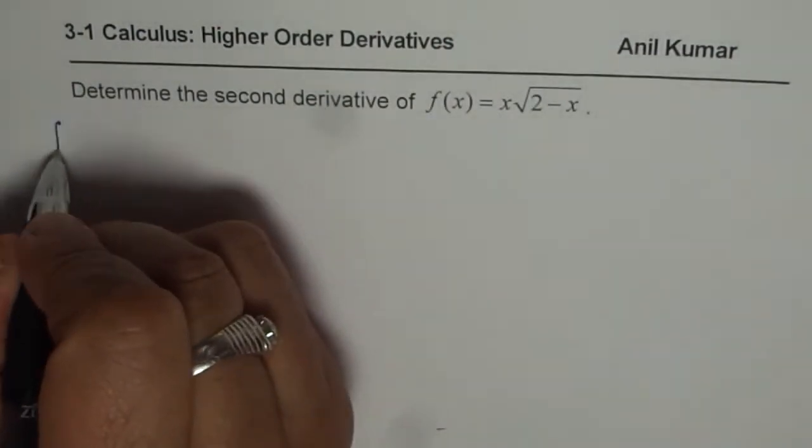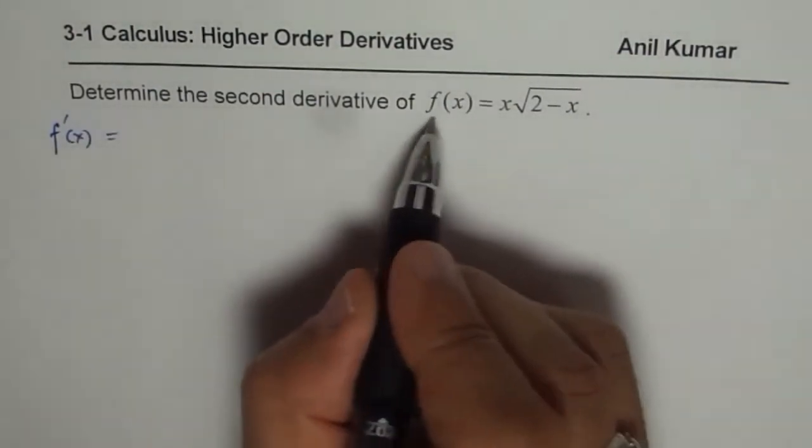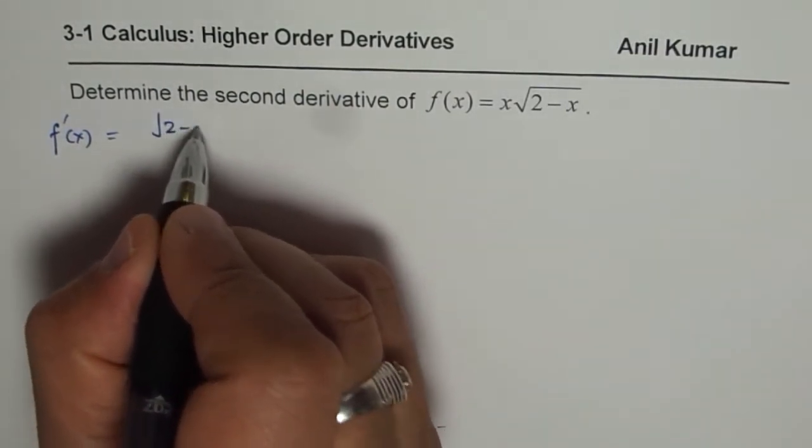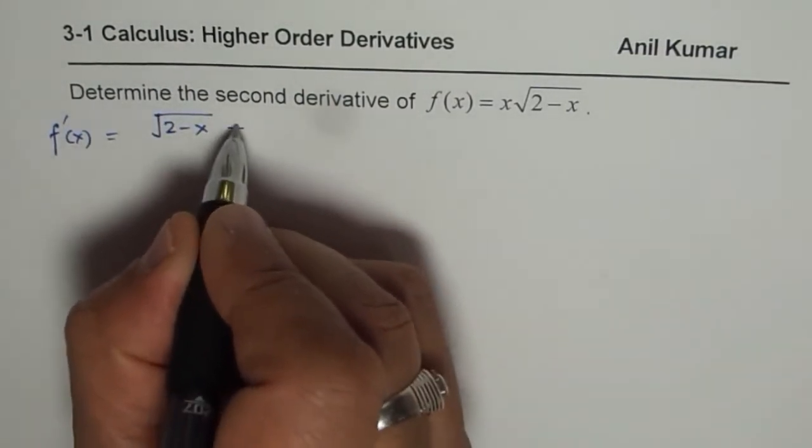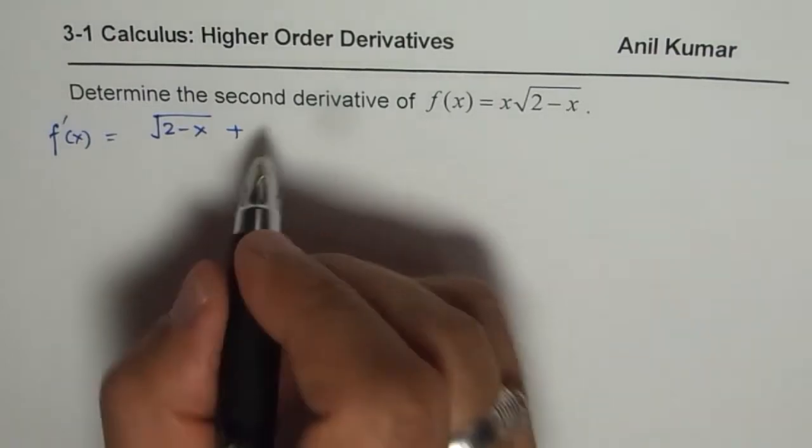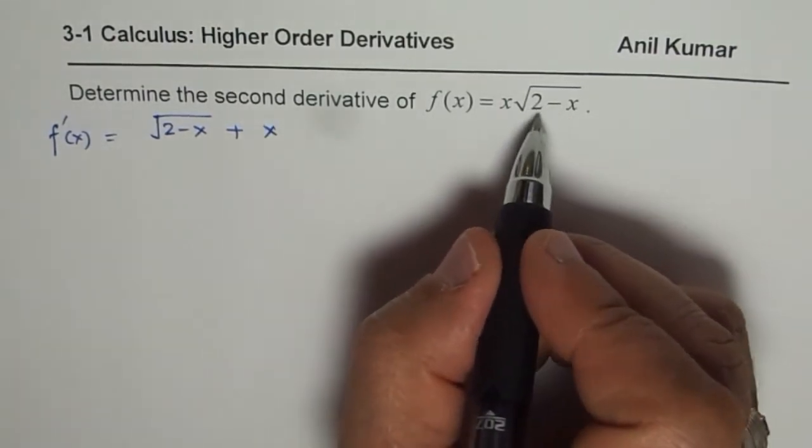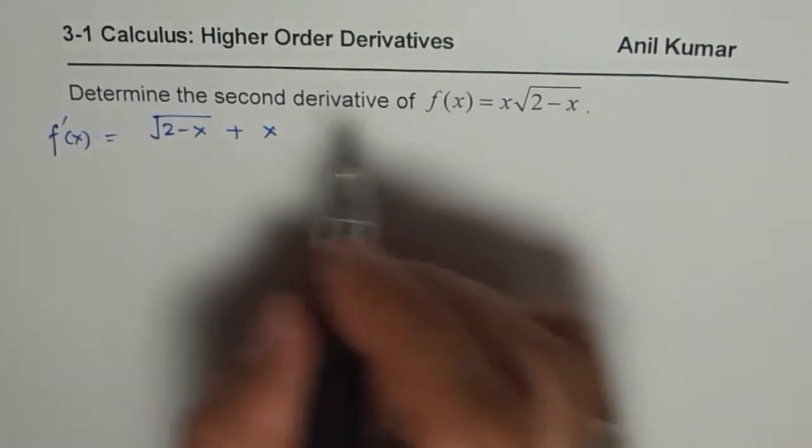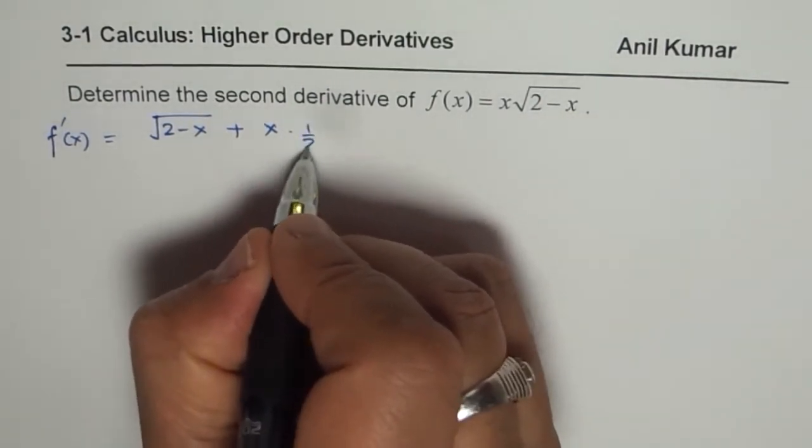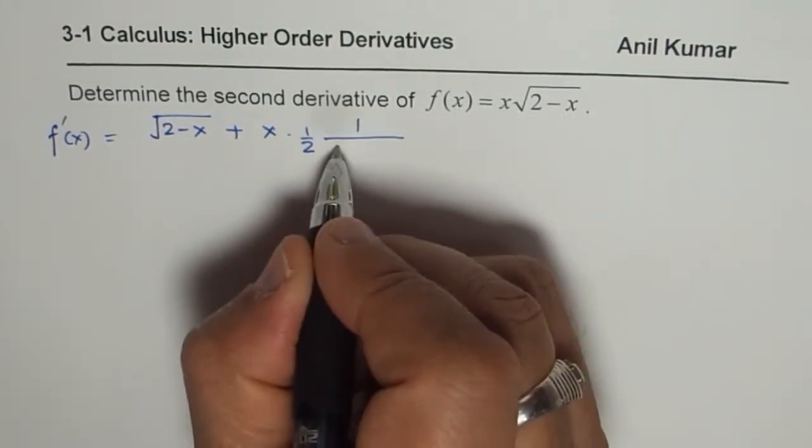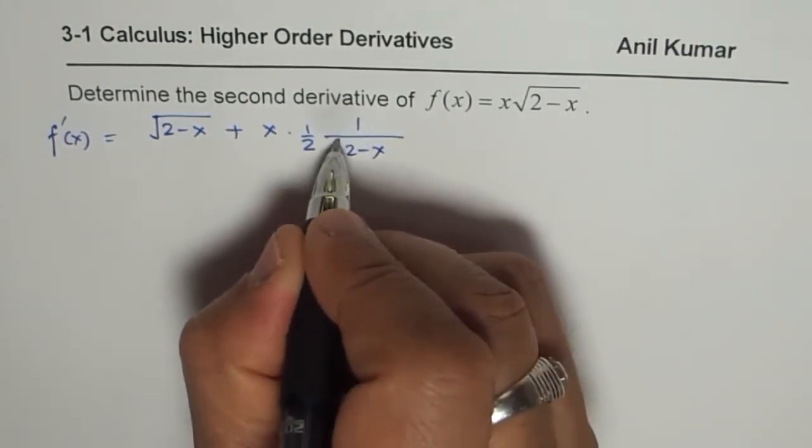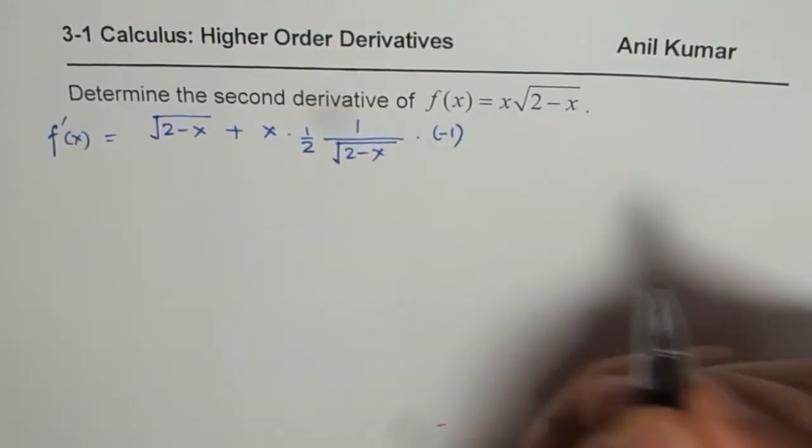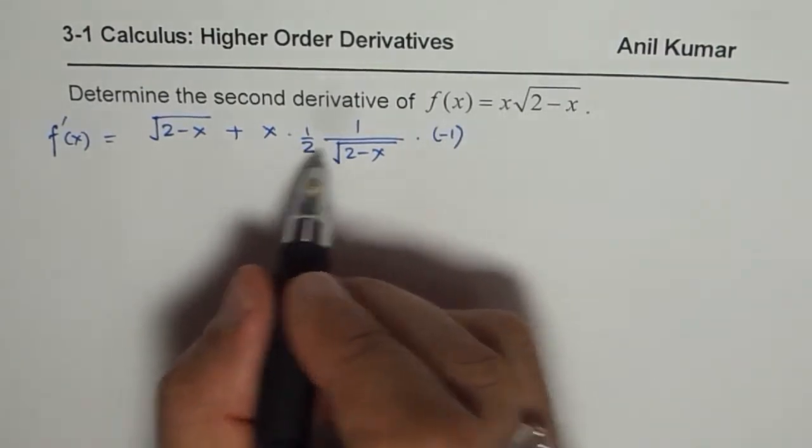So first derivative will be, we will apply the product rule to this. Derivative of x is 1, so we get square root of 2 minus x plus x times derivative of the second part, which will be 2 minus x to the power of half. We write this as half of 1 over square root of 2 minus x times derivative of inside function which is minus 1.